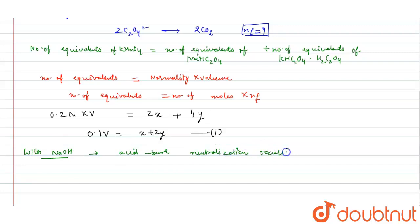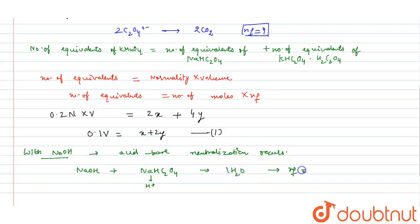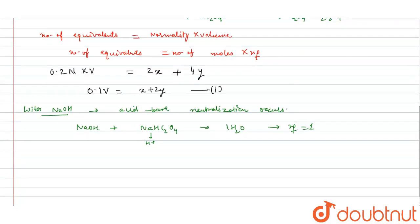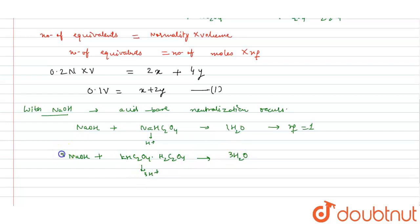With NaOH, a simple acid-base neutralization occurs. When NaOH reacts with NHC₂O₄, which has one acidic H⁺, it neutralizes to form one mole of water, so its n-factor is 1. When NaOH neutralizes KHC₂O₄·H₂C₂O₄, it gives 3H⁺, forming 3 moles of water, requiring 3 NaOH — so its n-factor is 3.